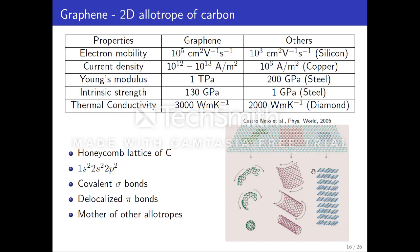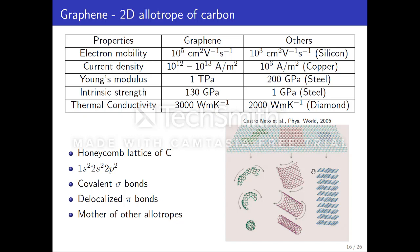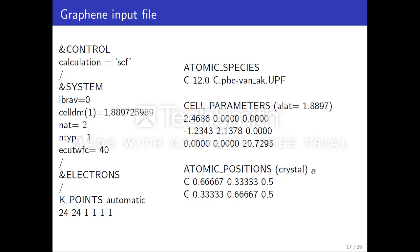For graphene — a wonder material discovered in 2004, which revolutionized research on 2D materials — assume I want to calculate the electronic band structure using Quantum ESPRESSO. I just need an input file of maybe 20 lines. This is the unit cell of graphene. I have to define the unit cell, and the input file specifies the number of atoms as two and n_type equal to one. There are some technical parameters like the plane-wave cutoff and k-point mesh.